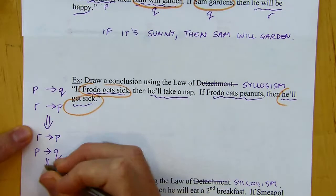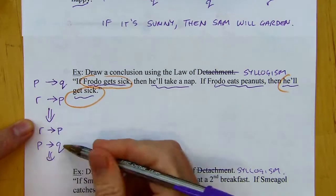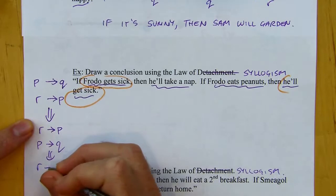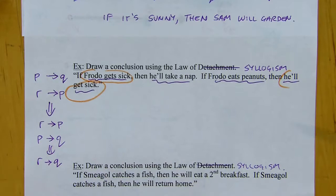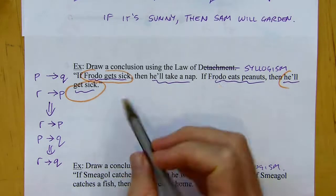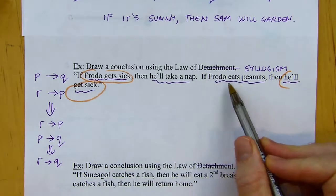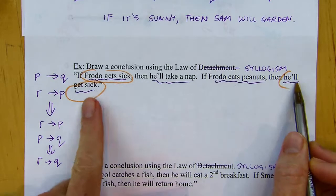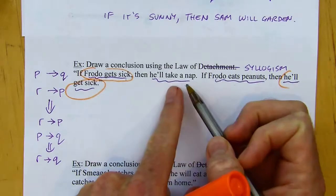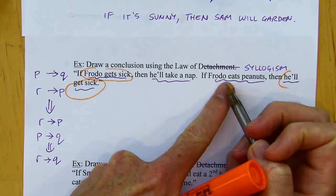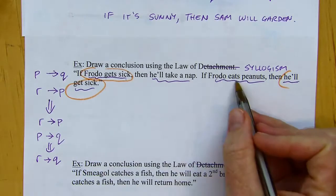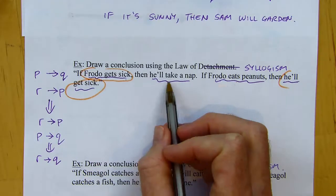Think of it as a story: Frodo eating peanuts happens before him getting sick, and getting sick happens before he takes a nap. So the beginning of the story is Frodo eating peanuts. The conclusion is: if Frodo eats peanuts, then eventually he'll take a nap.